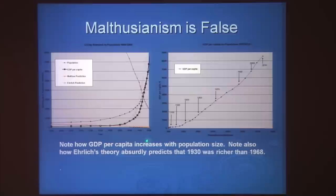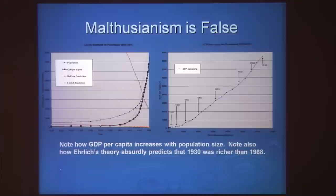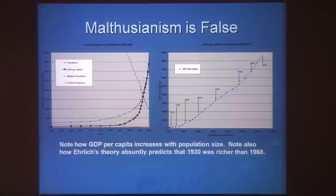To see the absurdity of Malthusian prediction, take Paul Ehrlich's famous 1968 book The Population Bomb. He said there were 3.5 billion people then, there'd be 7 billion by 2000, and people would be starving in the streets — even in the United States — unless we imposed a one-child policy. He predicted that as population went up, well-being would go down. Ehrlich was fairly accurate about his population projection — it took until 2010 to reach 7 billion — but he was completely wrong about what happened to human well-being. Instead of going down, it went up spectacularly.